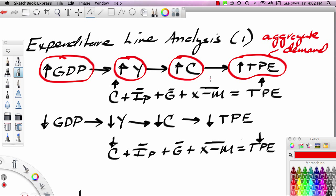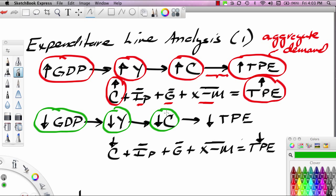We can see why this linkage occurs because total planned expenditures is the sum of consumption, planned investment, government purchases, and net exports. So if something pushes consumption up but the other components of spending I, G, and X minus M do not change, then TPE has to increase. Of course the reverse is true. If GDP falls then that is going to push disposable income downward which would push consumption spending downward which would push total planned expenditures downward.